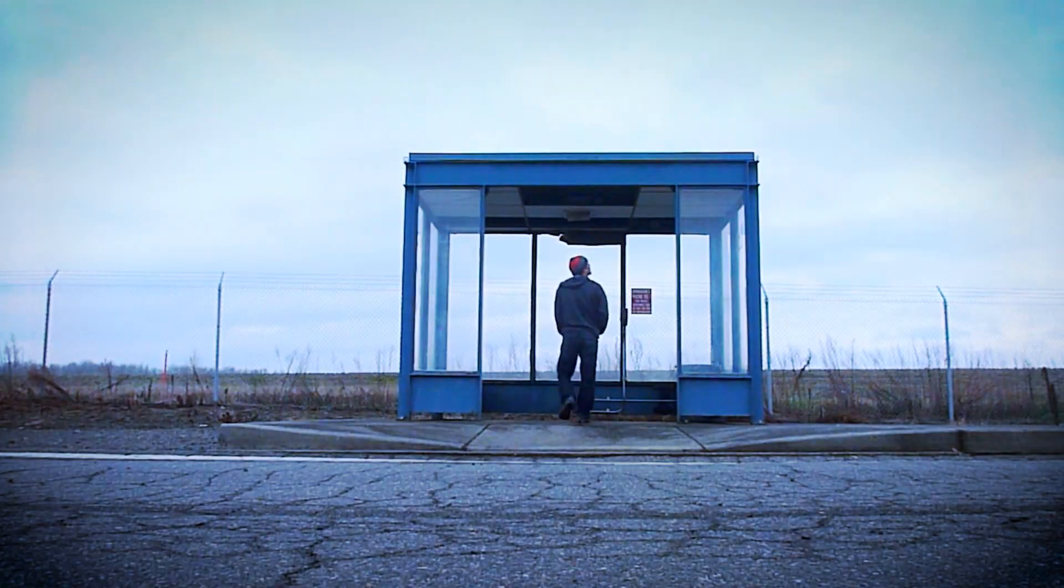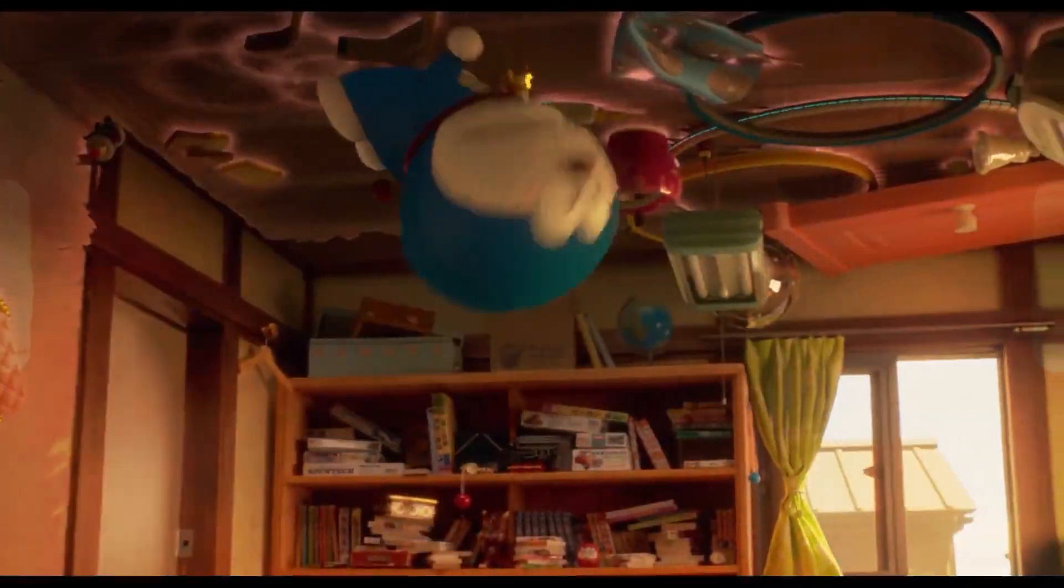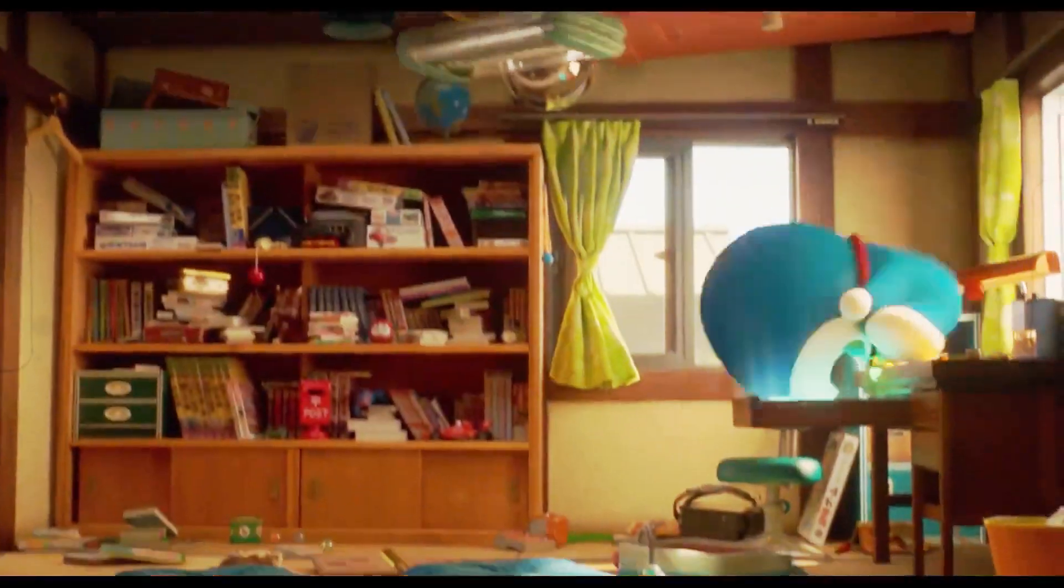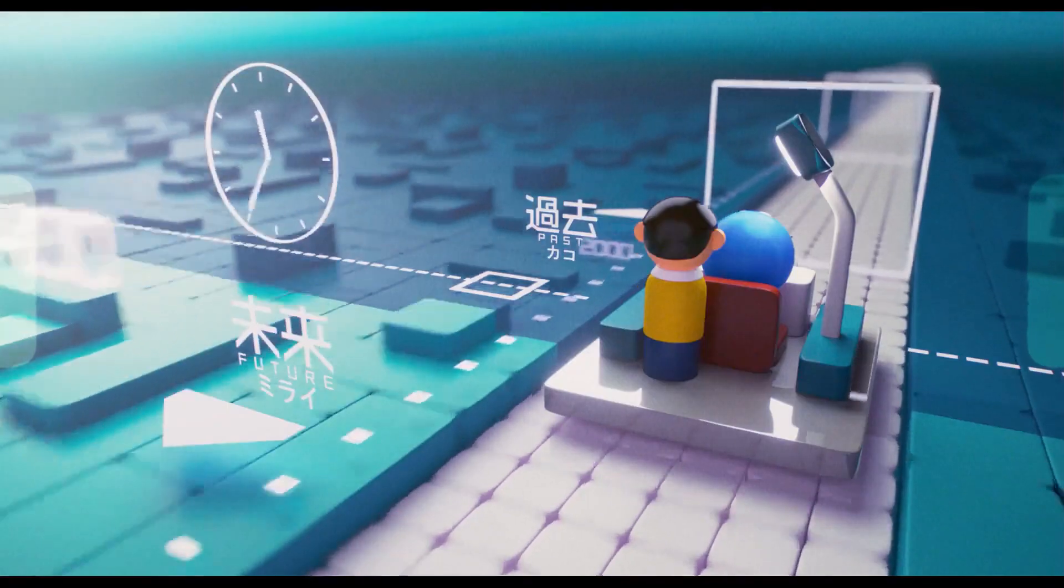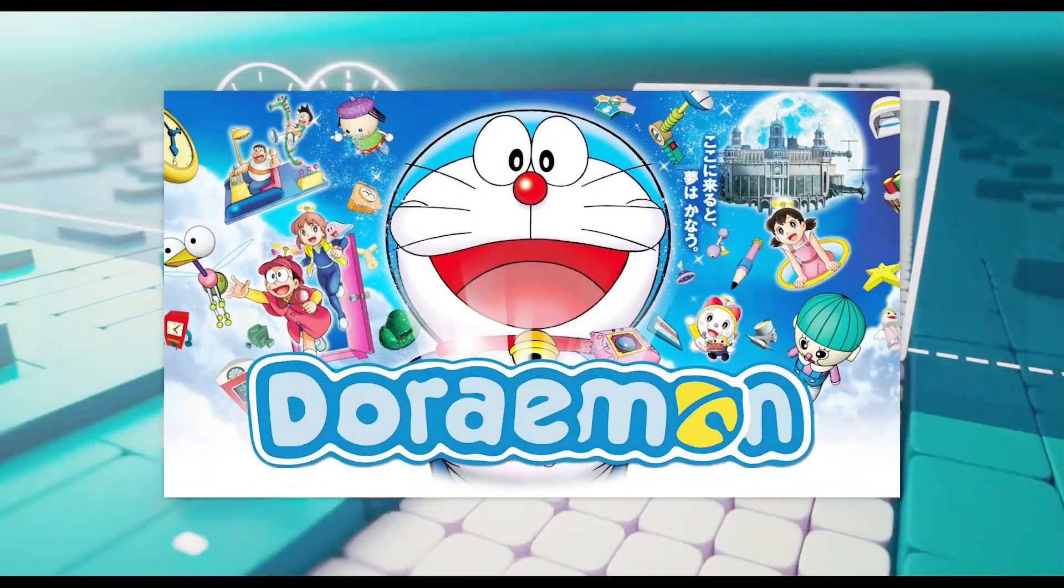The second type of time travel is instantaneous time jumping. The traveler travels from one point to another point at any instant of time using a time machine. For example, the very famous cartoon show called Doraemon.